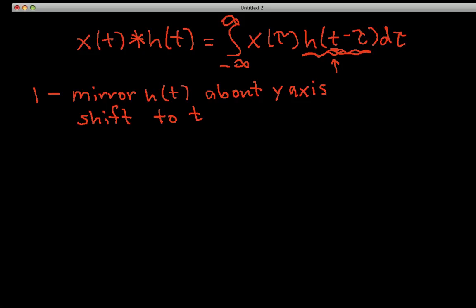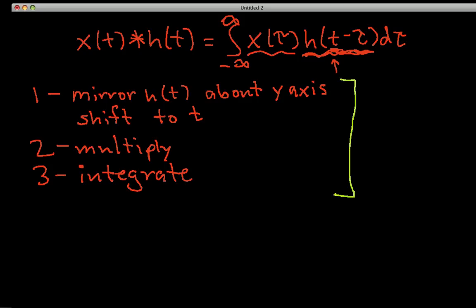Step 2 is multiply. So you multiply the x and the h and see what you get. Then you integrate. In other words, you find the area under the product of x and h and all of this is kind of like the shampoo bottle where it says rinse and repeat. You repeat this for various values of t.